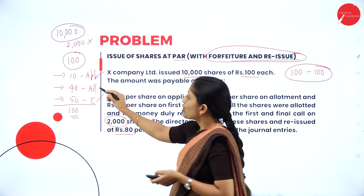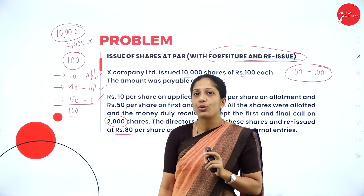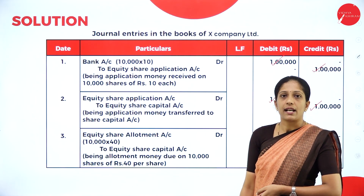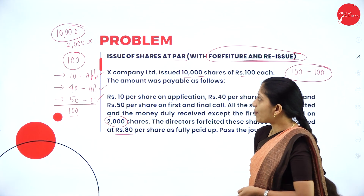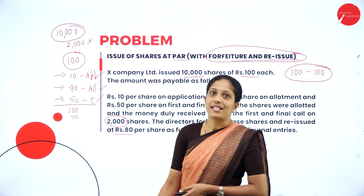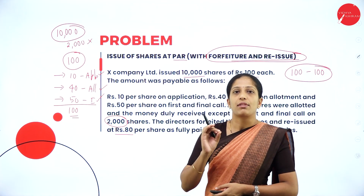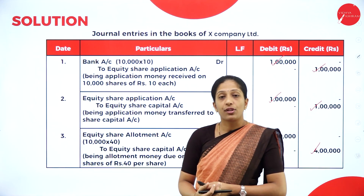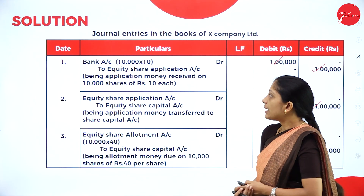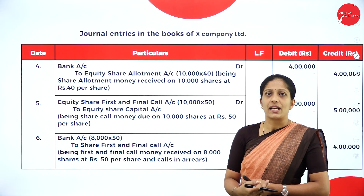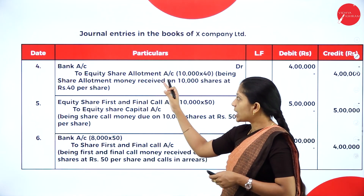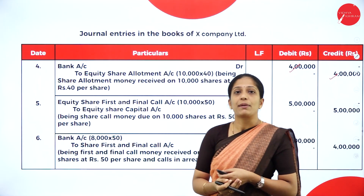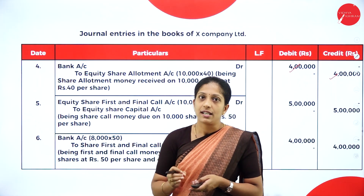For the allotment stage, the due entry is: Equity Share Allotment Account Dr. to Equity Share Capital Account — 10,000 × ₹40 = ₹4,00,000. Since shares are issued at par there is no premium. Narration: allotment money due on 10,000 shares of ₹40 each. The receiving entry is: Bank Account Dr. to Equity Share Allotment Account — 10,000 × ₹40 = ₹4,00,000.